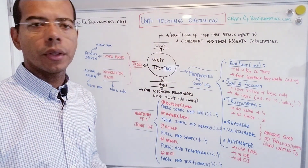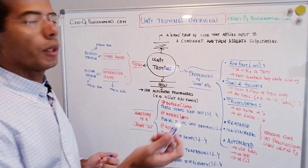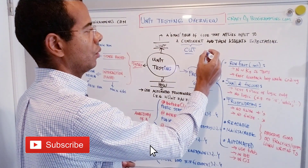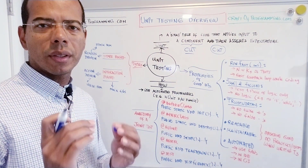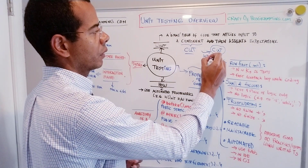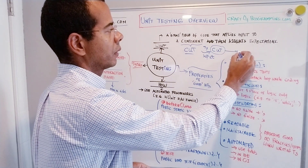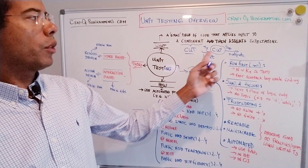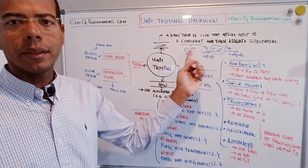A unit test is essentially a small piece of code that applies an input onto a component and then asserts or verifies the expectations that you set. Typically a component is referred to as CUT — component under test — and at the level of granularity of a unit test, that is a class or a very small group of closely related classes. You apply an input, which moves the class from state Y to state Z and produces an output, and your unit test asserts that the system is on state Z.